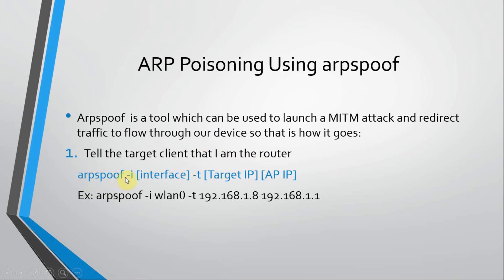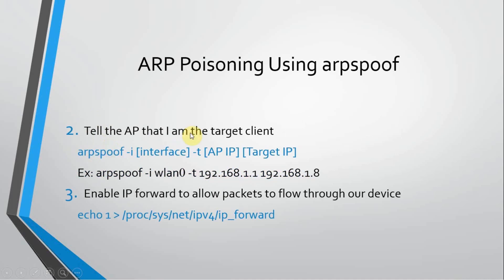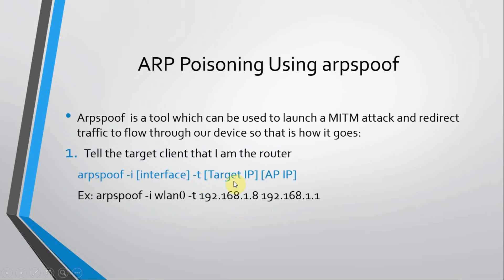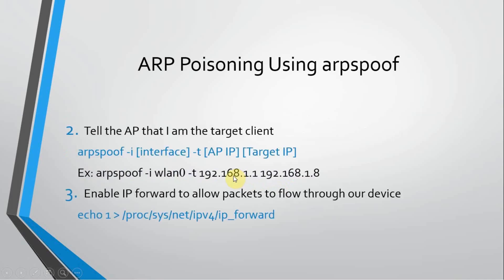The command is simple: we write the name of the tool, then the interface, then the target IP, and then the IP of the router. So the syntax is: arpspoof, then the interface in managed mode, then the target IP, then the AP's IP. In the next step we tell the AP that I am the target client — we do the same thing but swap the IPs.